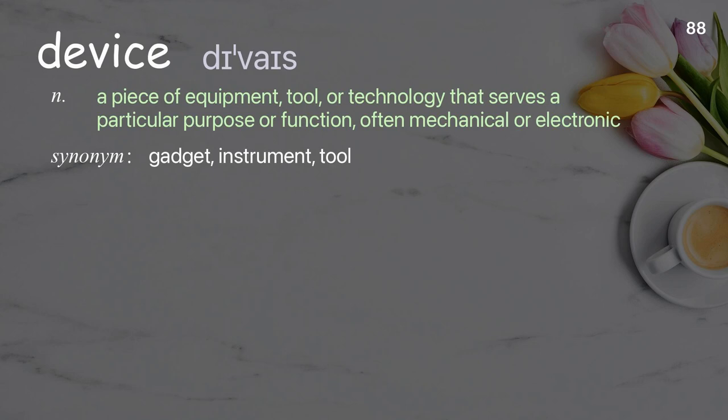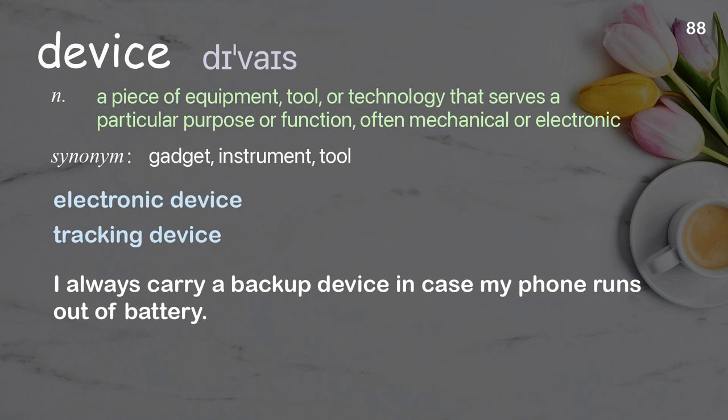Device: a piece of equipment, tool, or technology that serves a particular purpose or function, often mechanical or electronic. Examples: electronic device, tracking device. I always carry a backup device in case my phone runs out of battery.